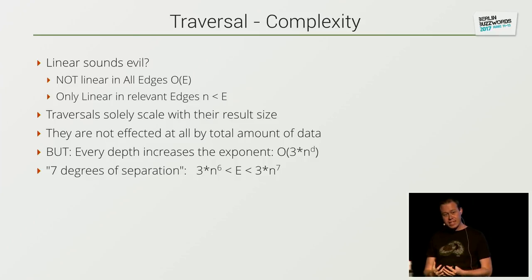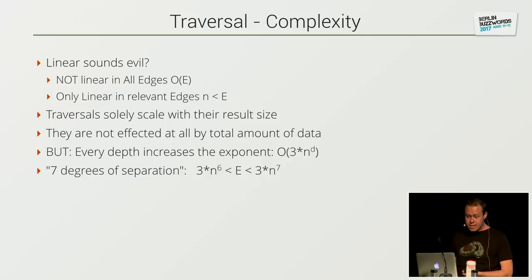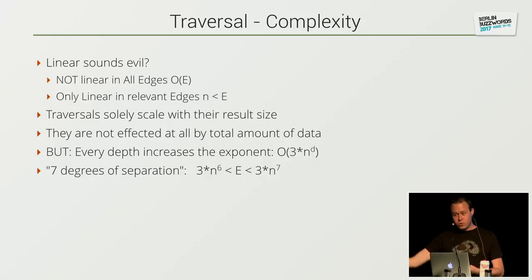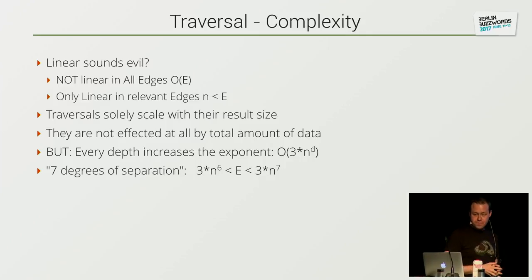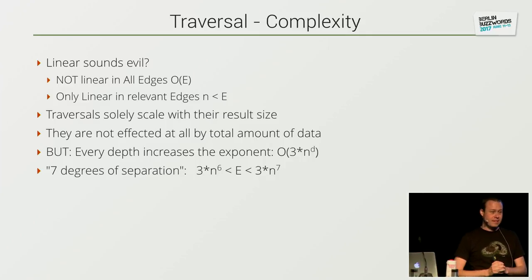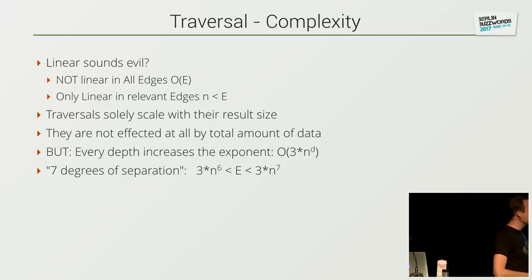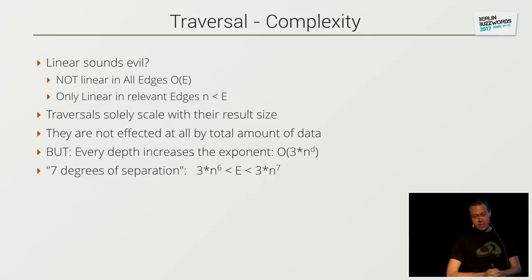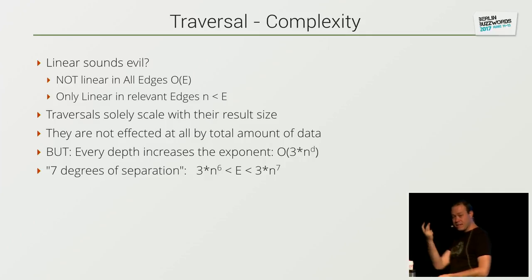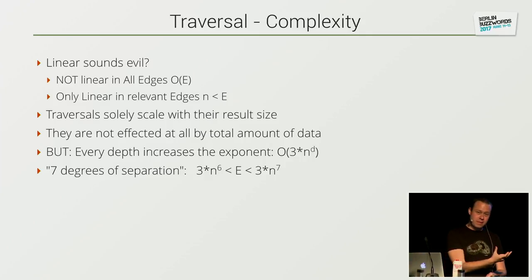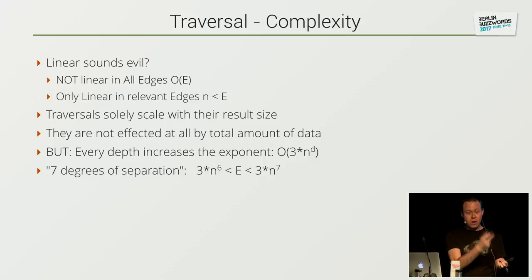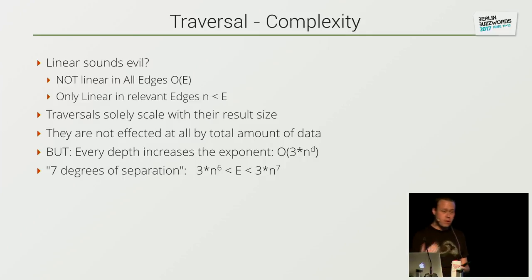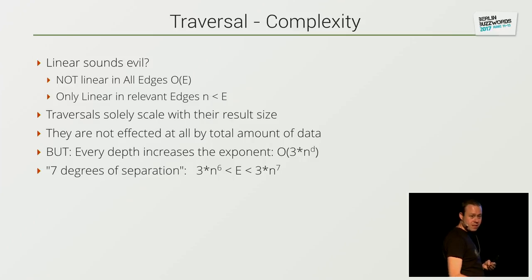Graph queries solely scale with their result size — they never scale with the total amount of data. But every depth increases the exponent. When I have 3×n vertices found in my first depth, I have to apply one depth search for depth two on all these vertices again, giving 3×n². For three steps, it's 3×n³, and so on.